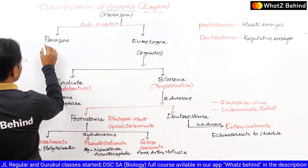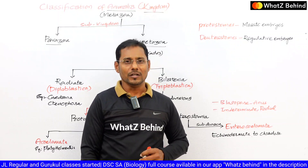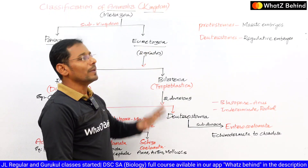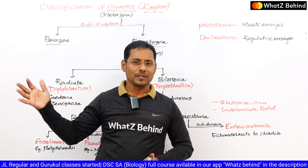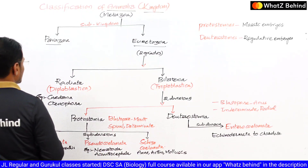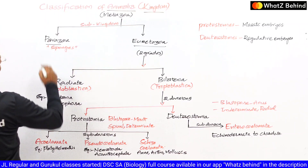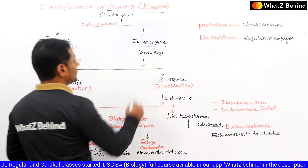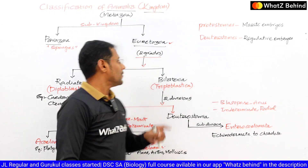The Animalia kingdom is classified into two sub-kingdoms: one is Parazoa and the second one is Eumetazoa. Eumetazoa means organisms that have true tissues present. Those kinds of organisms are grouped under Eumetazoa. Parazoa is a blind branch — it is not further divided. Parazoa includes Porifera, that is sponges. The phylum Porifera comes under Parazoa.